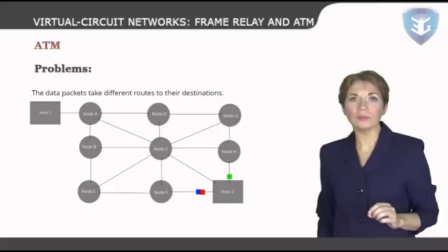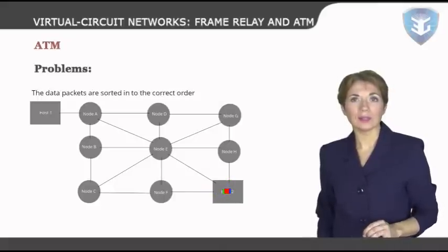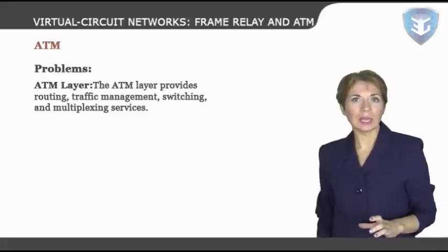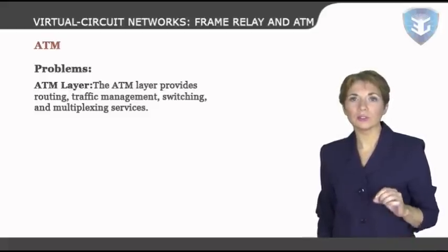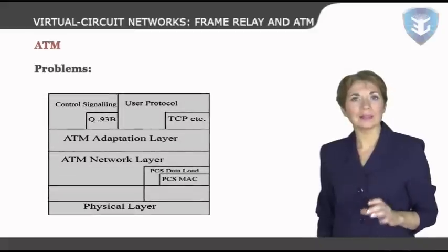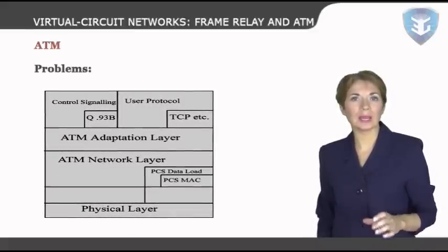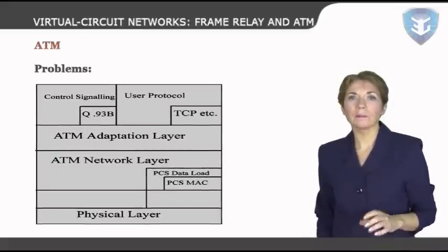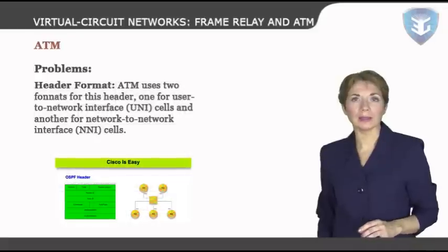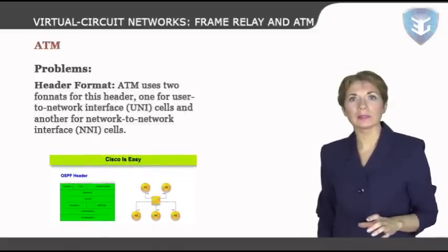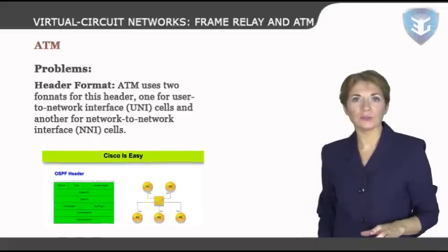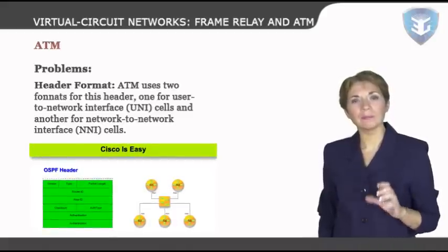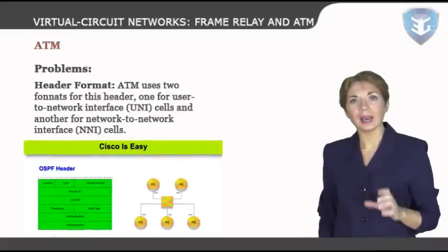The ATM layer provides routing, traffic management, switching, and multiplexing services. It processes outgoing traffic by accepting 48-byte segments from the AAL sublayers and transforming them into 53-byte cells by the addition of a 5-byte header. ATM uses two header formats: one for user-to-network interface cells and another for network-to-network interface, or NNI, cells. These headers are in the byte-by-byte format preferred by the ITU-T.